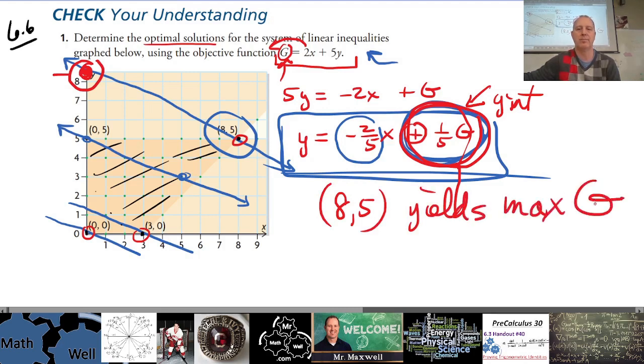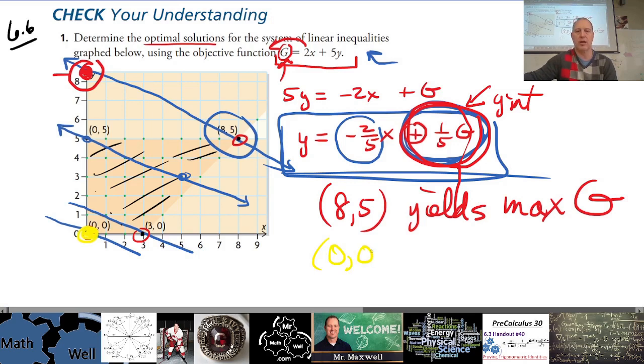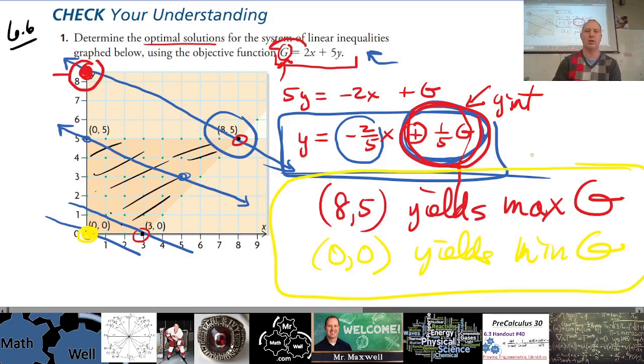But nevertheless, the point (8,5) yields the max G because it's the highest intercept. The lowest intercept would be (0,0), that's the lowest intercept, so (0,0) yields minimum G. Okay, so you want to check your answers in the back of the book there.